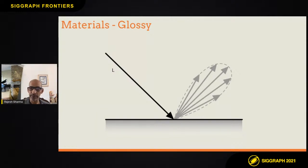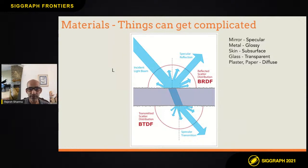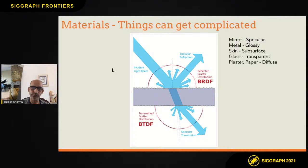Things can get complicated. The surface of an object, if you look at it microscopically, is not smooth — it will have these jagged little edges at a very small microscopic level. If you look at light as a whole, for a shiny or mirror-like object it reflects back in a direction that is at the same relative angle to the normal as it came in.